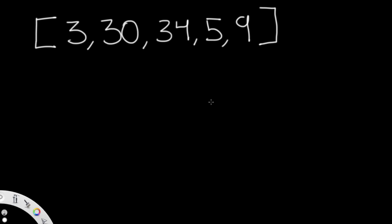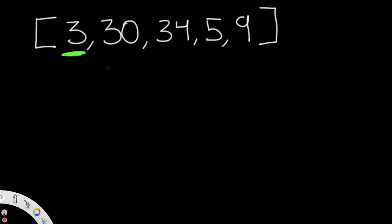Let's go step by step with the example [3, 30, 34, 5, 9]. We'll use two pointers: a green pointer starting at index 0 and a red pointer starting at the next index. We form two numbers by concatenating: green first then red gives us 330, meaning we take '3' and append '30' to get 330. Converting values to strings makes this concatenation much easier.